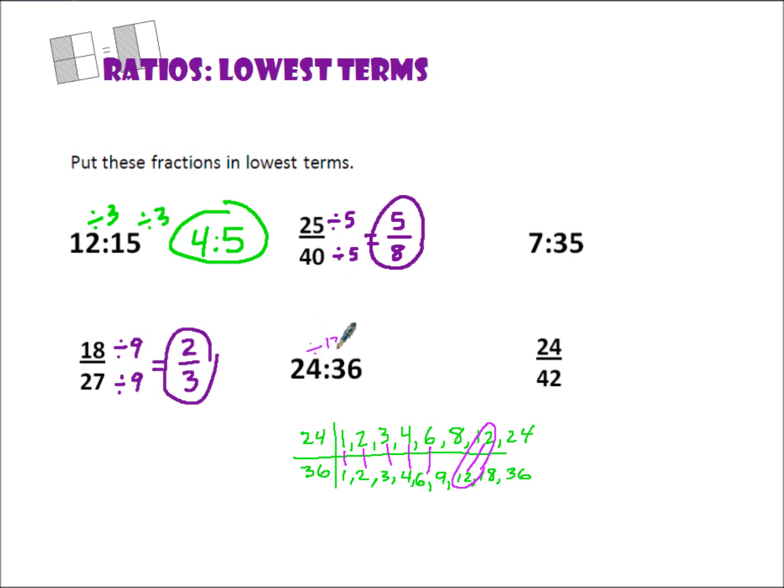So, 24 divided by 12 is 2, and 36 divided by 12 is 3. My gap between these is 1, so I know I'm in lowest terms with 2 to 3.